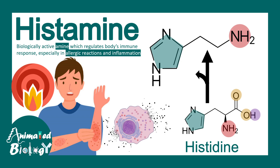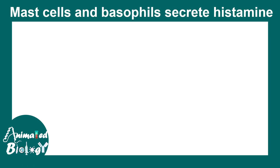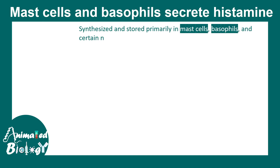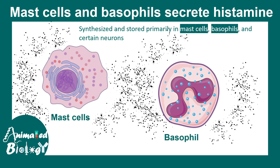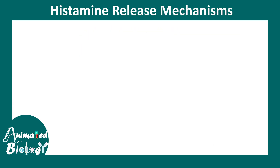In this video we'll talk about histamine and histamine antagonists. This is a quick overview. Histamine is a biologically active amine secreted by mast cells and basophils, which modulate allergic responses and inflammation in the body.